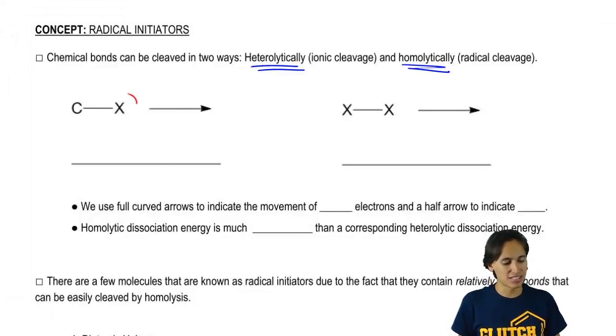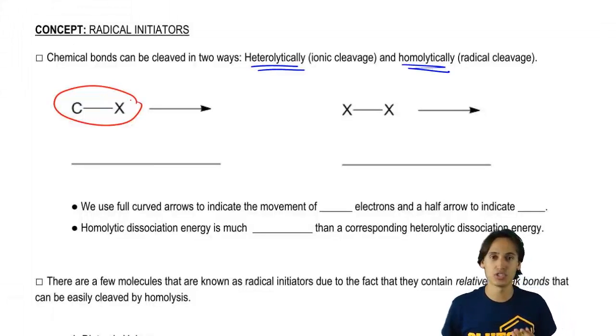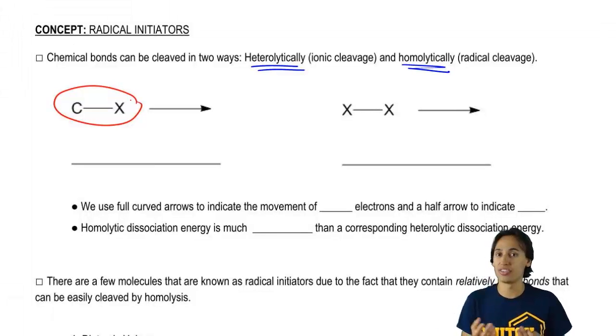So let's look at this example bond right here. I have a carbon and some kind of halogen. How could we predict which of the species would get the negative charge or would get the lone pair on it?